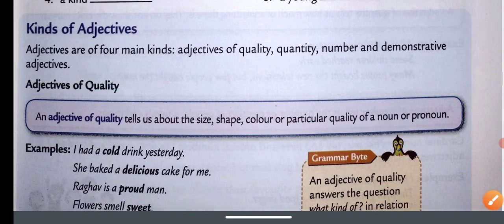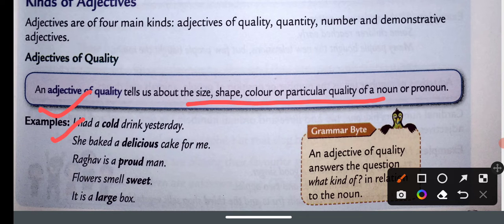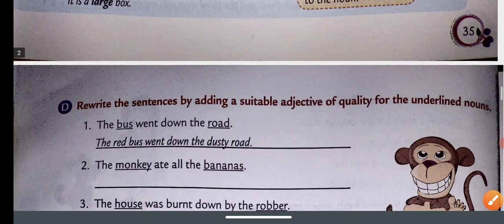Now let's look at the kinds of adjectives. Adjectives के भी कुछ प्रकार होते हैं। The first one is adjective of quality — it describes the state, size, shape, color, and particular quality of a noun or pronoun. For example: I had a cold drink yesterday, a proud man, a sweet smell, a large box.